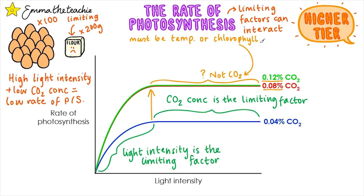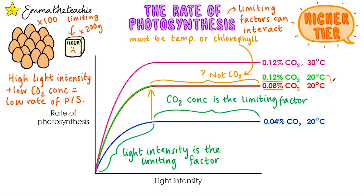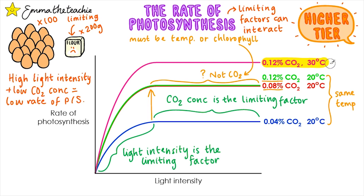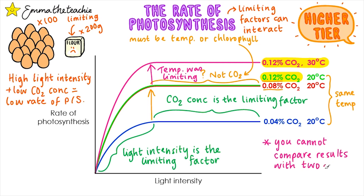Since chlorophyll is hard to change externally, we'll change the temperature instead. The early investigations were done at 20 degrees Celsius, but the final investigation has been increased to 30 degrees Celsius. We can compare this result, but only to the investigation that had the same concentration of CO2 — otherwise we have two different independent variables. We can see that when we compare these, the rate of photosynthesis does increase when we increase the temperature. Therefore, temperature was the limiting factor in the earlier investigation. You cannot compare results with two different independent variables, so we were only able to compare the two highlighted results because they had the same CO2 concentration.